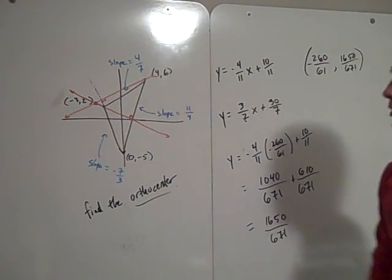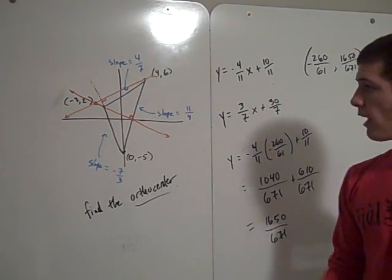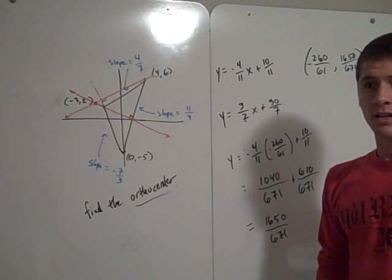That's how you find the coordinates of the orthocenter of a triangle given three points in the Cartesian plane.